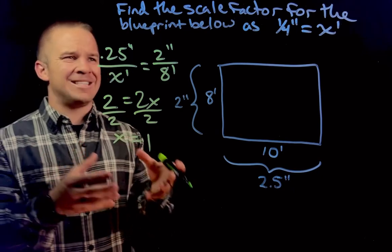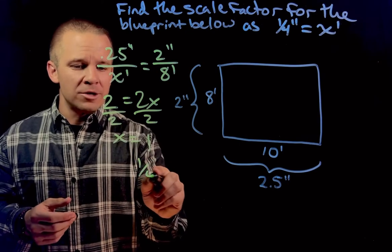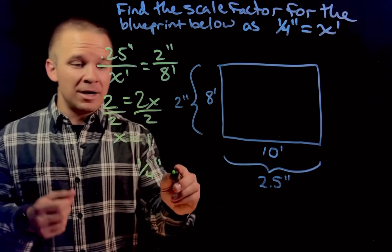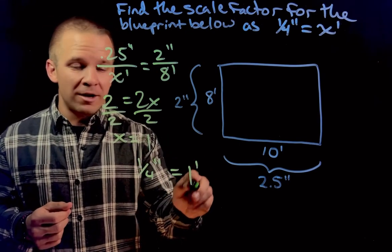So what does that actually mean in the context of this problem? This means one quarter inch on my blueprint equals one foot in real life.